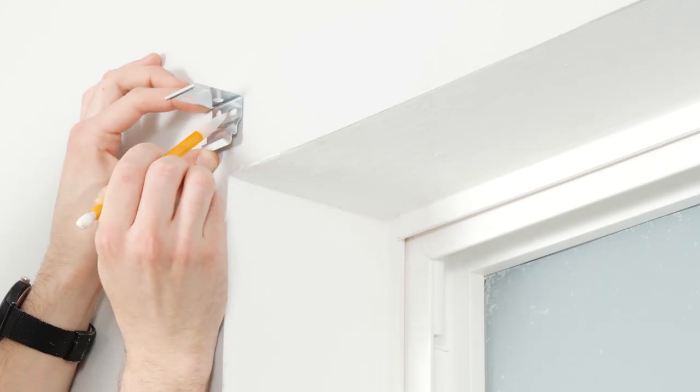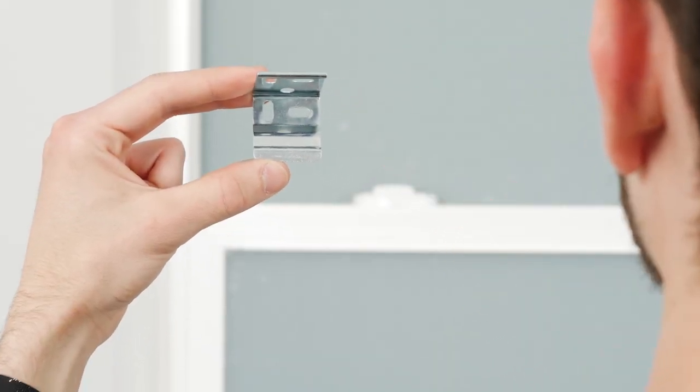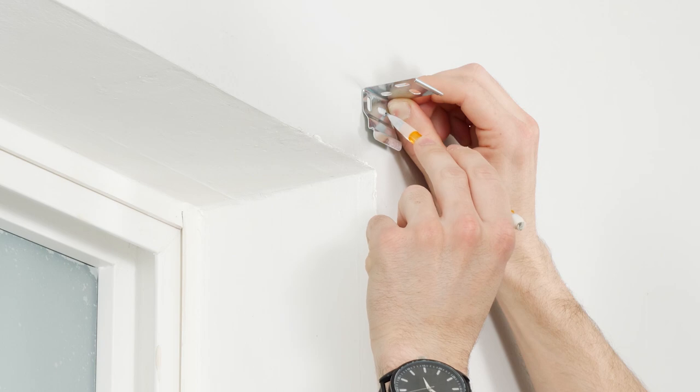Then, position a bracket just over the far left mark and use a pencil to mark where the screws will go. Repeat this for any remaining bracket locations.